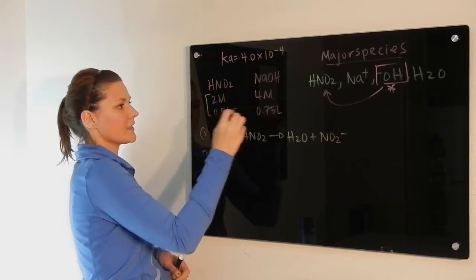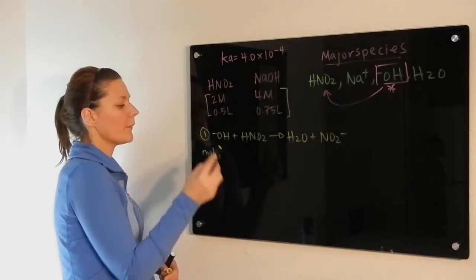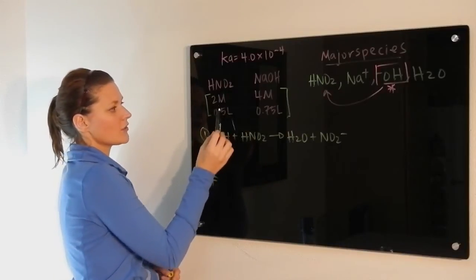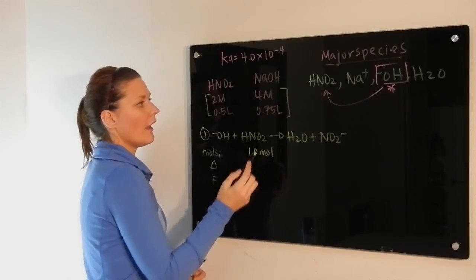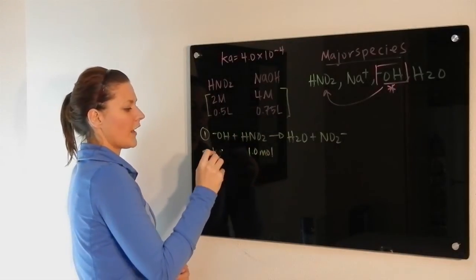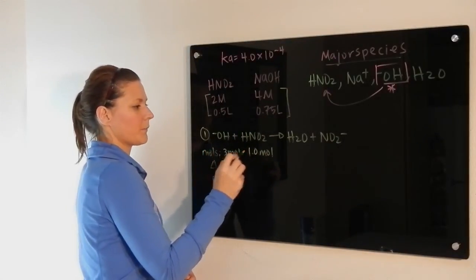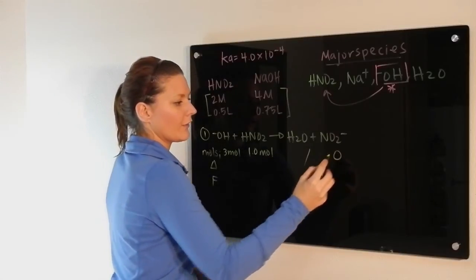We're going to use these pieces of information here to determine how many moles we have. So for nitrous acid, 2 times 0.5, we still have our 1 mole, and then here 4 times 0.75 would give us 3 moles. We don't care about water, none of that initially.